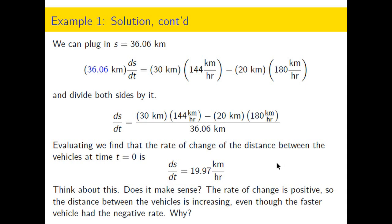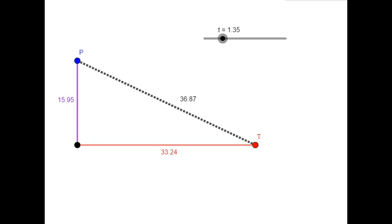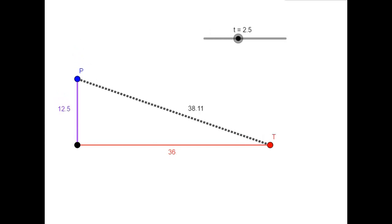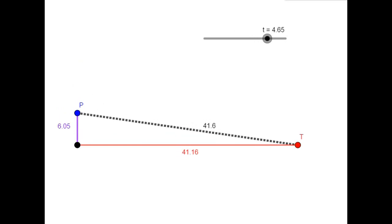So let's jump back into the animation and take a look at this. And I want you to notice what happens, especially when P gets really close to Sioux Falls. The distance that T is from Sioux Falls and the hypotenuse, they're essentially the same.